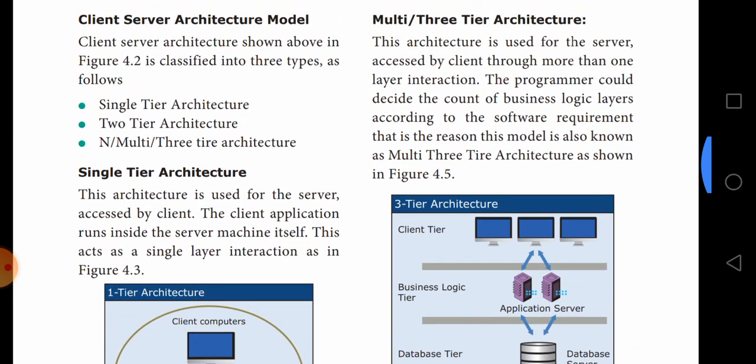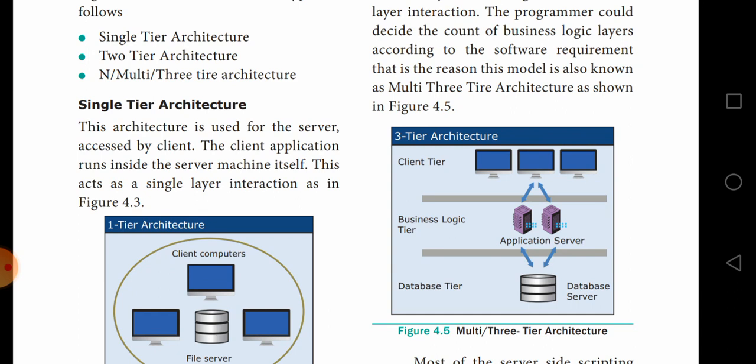Next is three tier architecture. There are three tiers: the first is the client tier, another is the business logic tier, and another is the database tier. This architecture is used for the server accessed by the client with more than one layer interaction. The programmer can decide the count of business logic layers according to the software requirement. In summary: single tier — client application runs inside the server machine; two tier — has two layers: client tier and database tier; three tier — has three layers: client layer, business logic tier, and database tier.